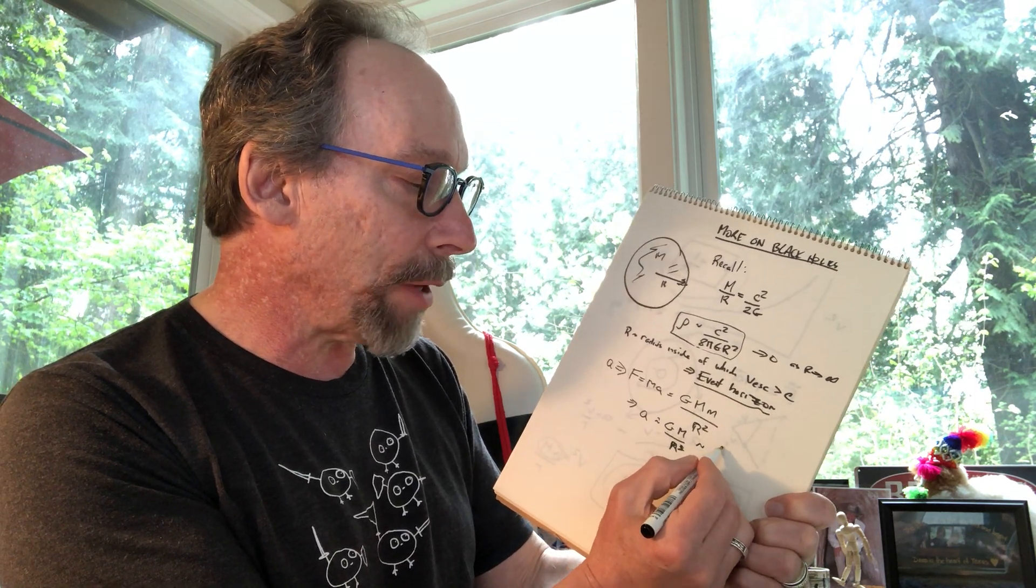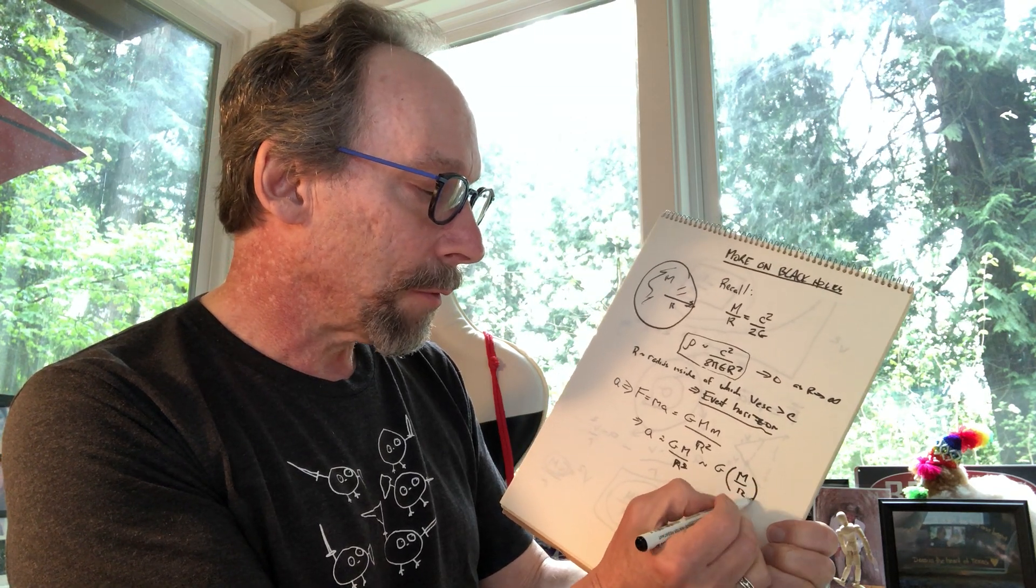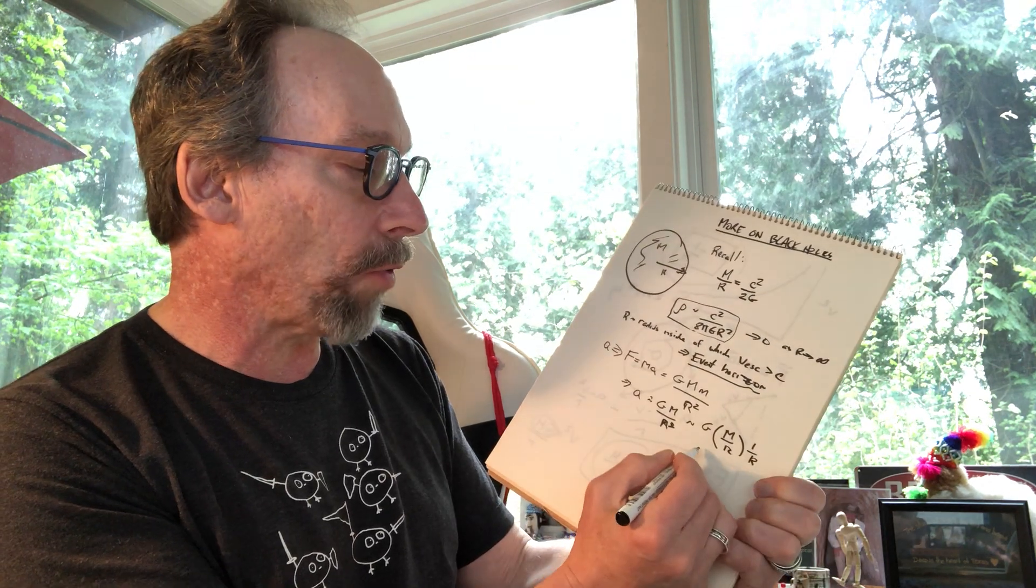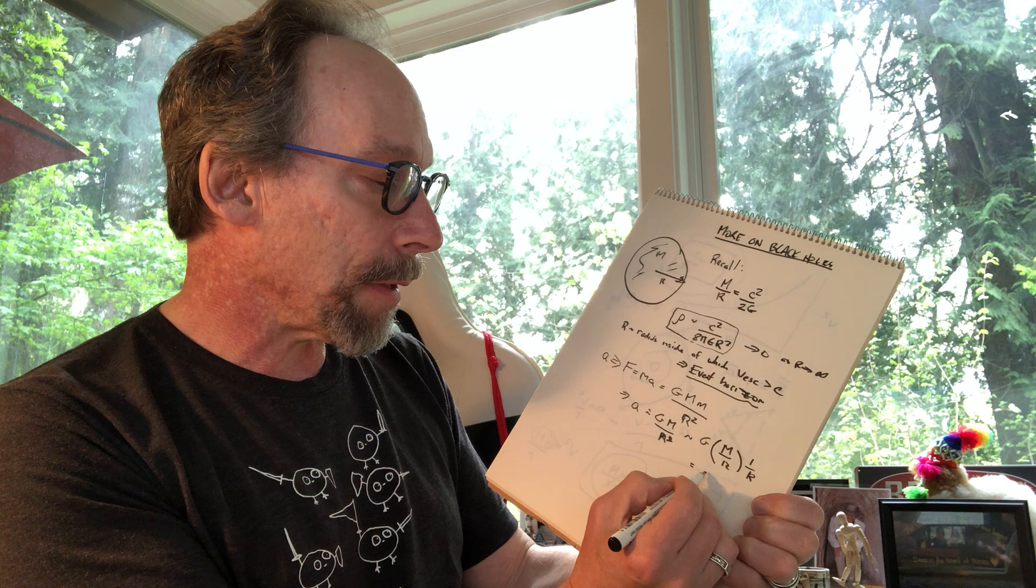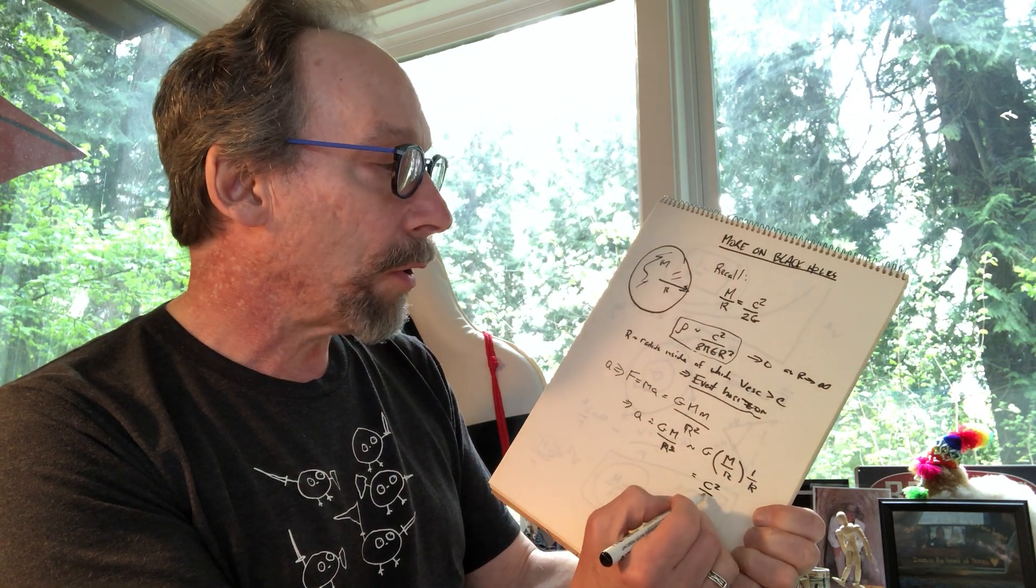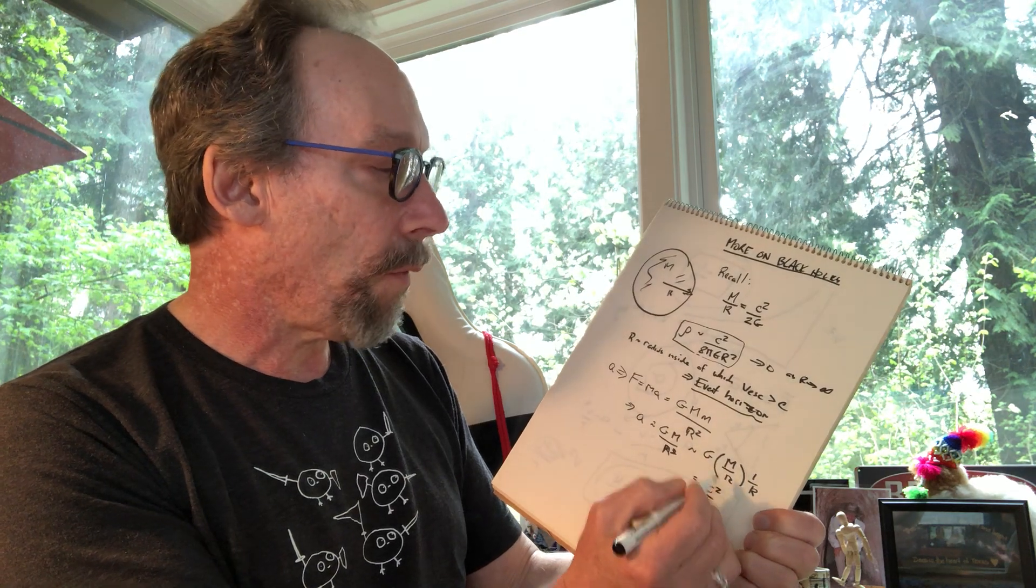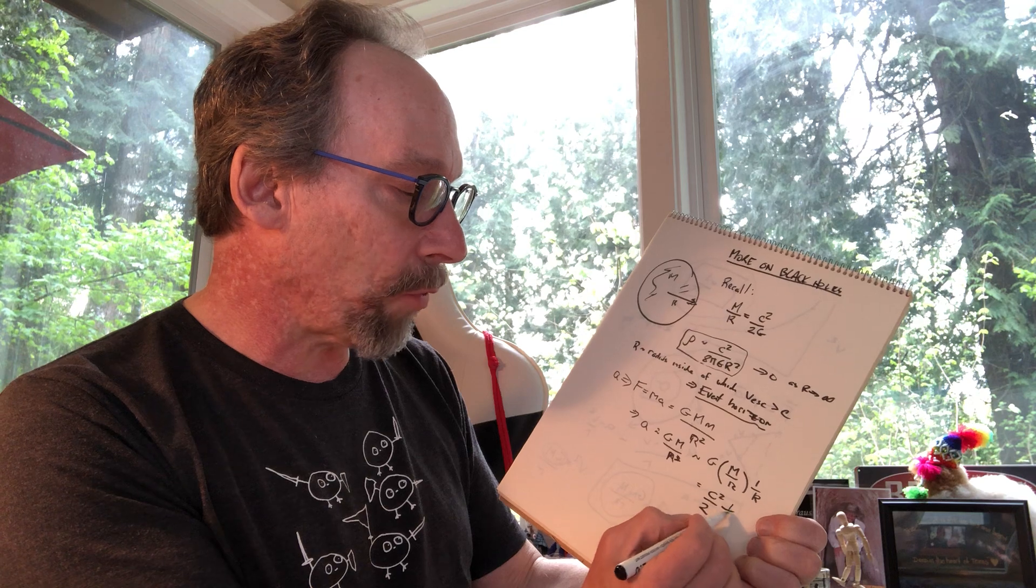Now, this, however, can be written as g times m over r times 1 over r. Now, we know what m over r is. m over r is c squared over 2g. So, this is c squared over 2, canceling the g's, and then times 1 over r.